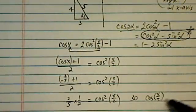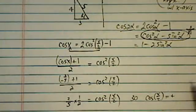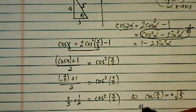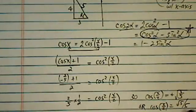So cosine of x over 2 is equal to positive. I'll explain why we have positive. Or cosine x over 2 is equal to radical 5 over 5.